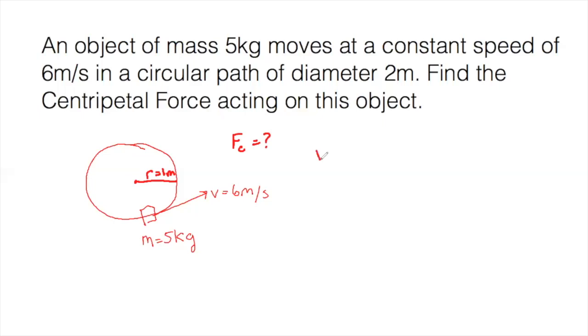So when I look at my givens of V equals 6 meters per second, R equals 1 meter, and M equals 5 kilograms, I know that from my reference table, that ac is equal to V squared over R.